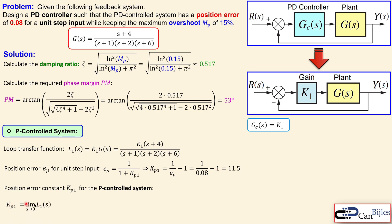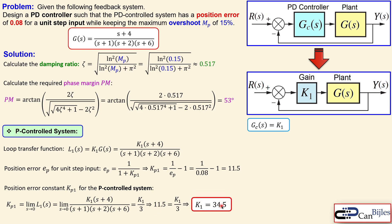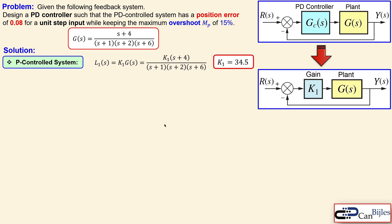Using the limit expression for the position error constant with loop transfer function L1, and setting s → 0, the expression simplifies to k1 over 4 effectively. Setting this equal to 11.5 gives k1 = 34.5. So for a P controller satisfying the position error specification, we need a gain of 34.5.